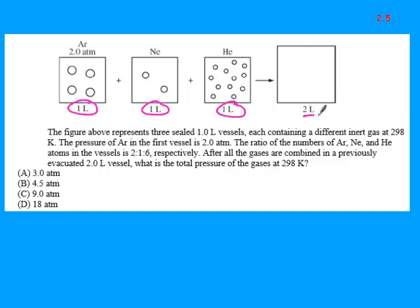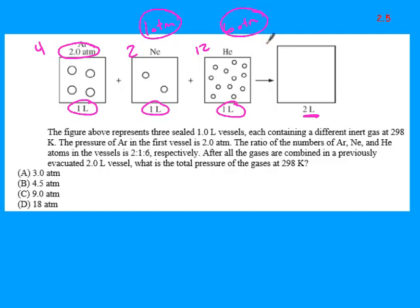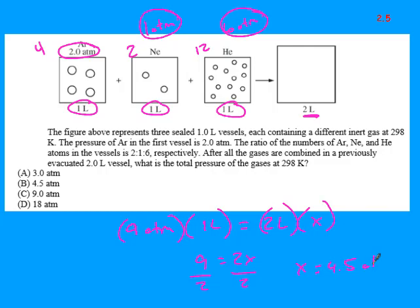In this particle-counting problem, all containers are 1 liter going into a 2-liter container. The first container has 4 atoms at 2 atm. The second has 2 atoms, so half the particles means half the pressure: 1 atm. The third container has 12 particles—3 times as many as the first—so 2 × 3 = 6 atm. Adding up: 2 + 1 + 6 = 9 atm in a 1-liter container going into 2 liters, giving a new pressure of 4.5 atm.